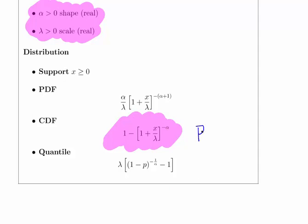The formula is 1 plus x over lambda to the power of minus alpha. That's the probability of X being greater than a certain value.